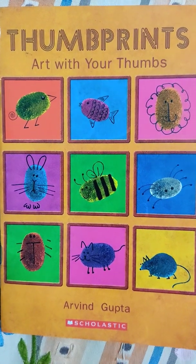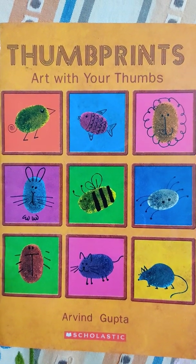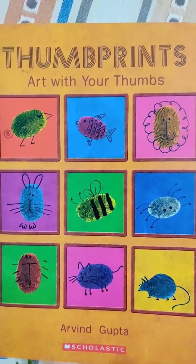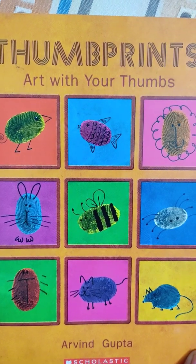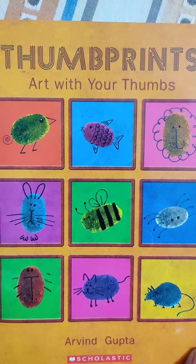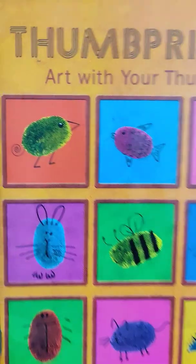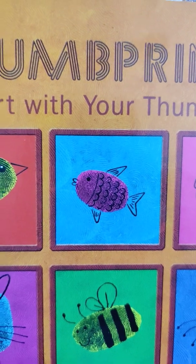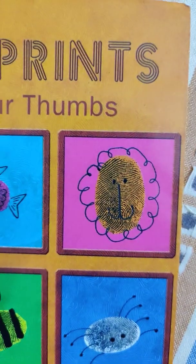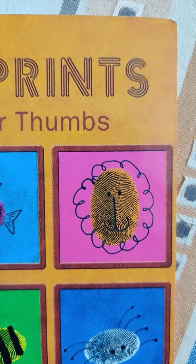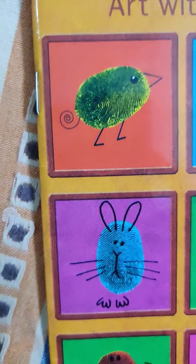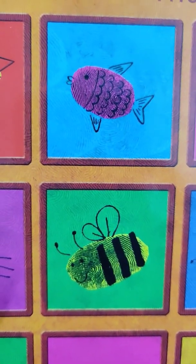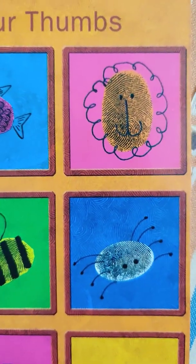Hello parents, hello children. This is thumbprint art — with your thumbs you can create different animals. These are very easy thumbprint art designs for you all. The first is a bird, a fish, a lion with a mane, a bunny rabbit, a honeybee, and a crab.